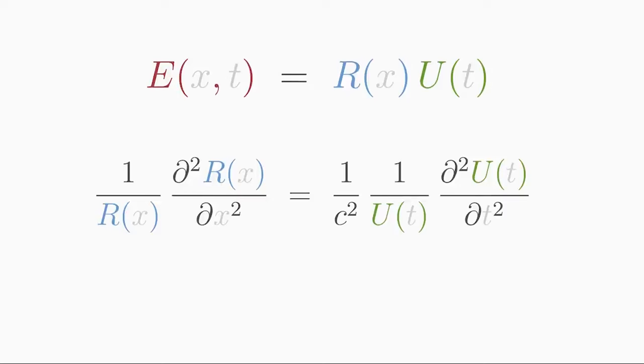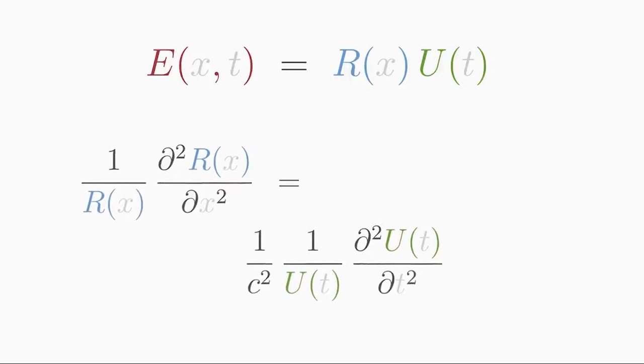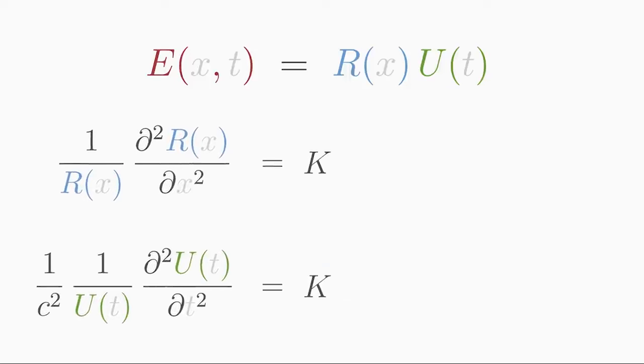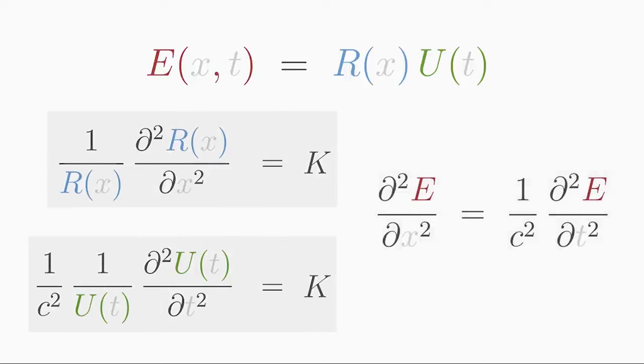So, let us set the left side and the right side equal to a constant k. Thus, we have transformed a partial differential equation into two ordinary differential equations. And the good thing is that the two differential equations are not coupled. That means you can solve them independently and then multiply the solutions like in the product ansatz to get the general solution for the partial differential equation.